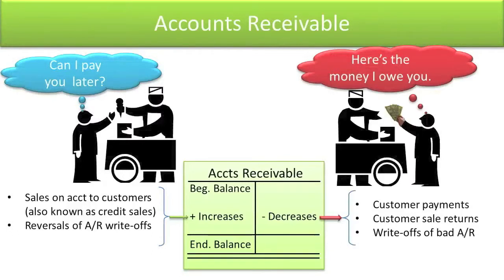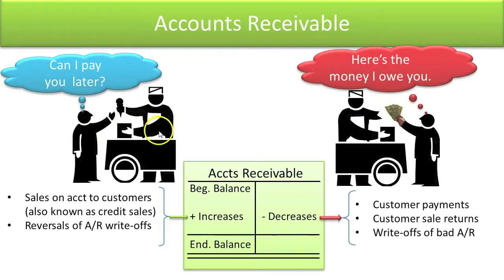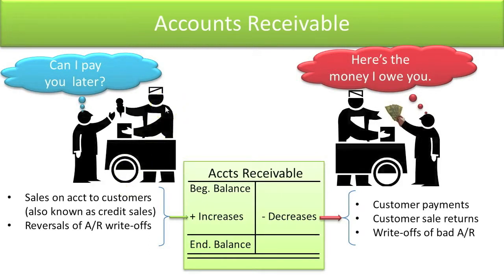Let's move on to another asset: accounts receivable. If you're selling to customers and they ask to pay later and you agree to that, you have what's called an account receivable. An account receivable is an asset because it will benefit you in the future — you'll get cash when they finally do pay. You obtain control over that by making a sale to those customers, so they agreed to pay you, and that was the past transaction.